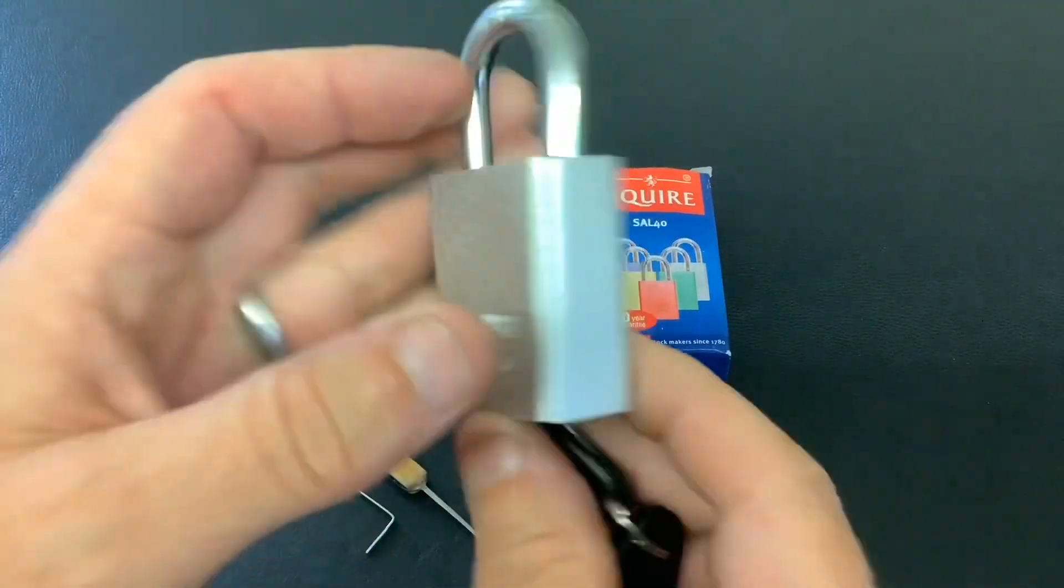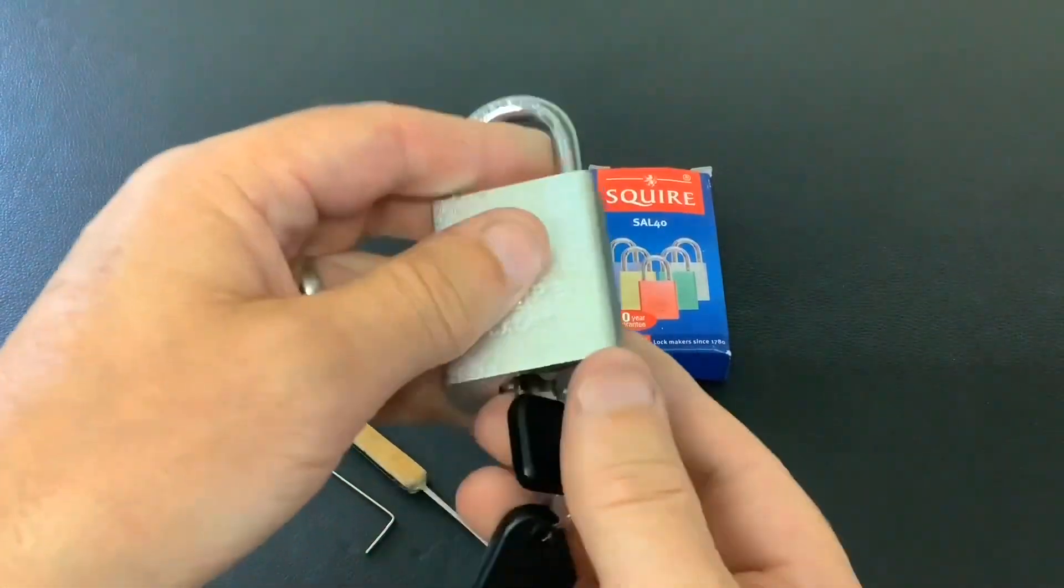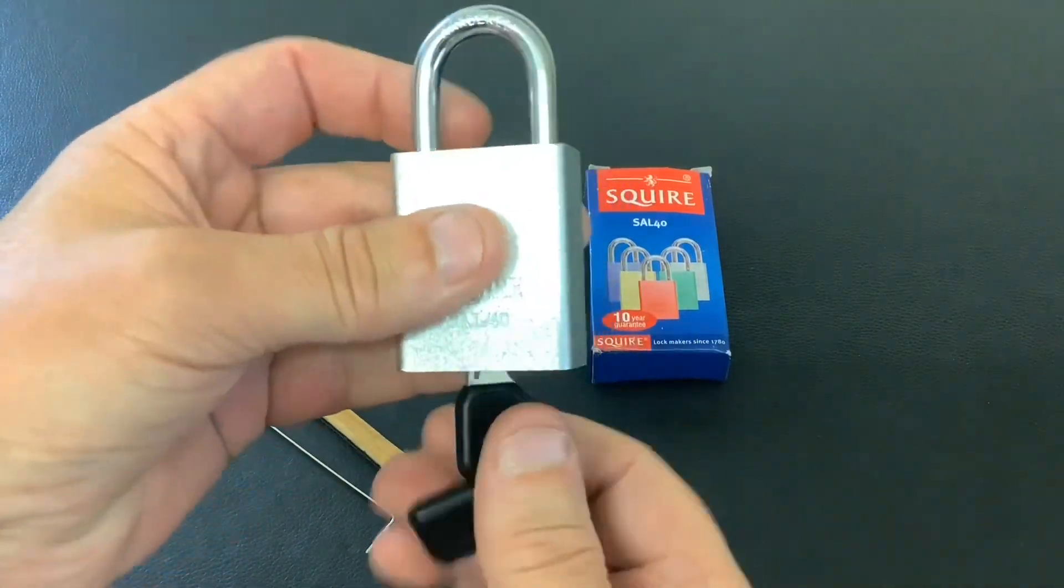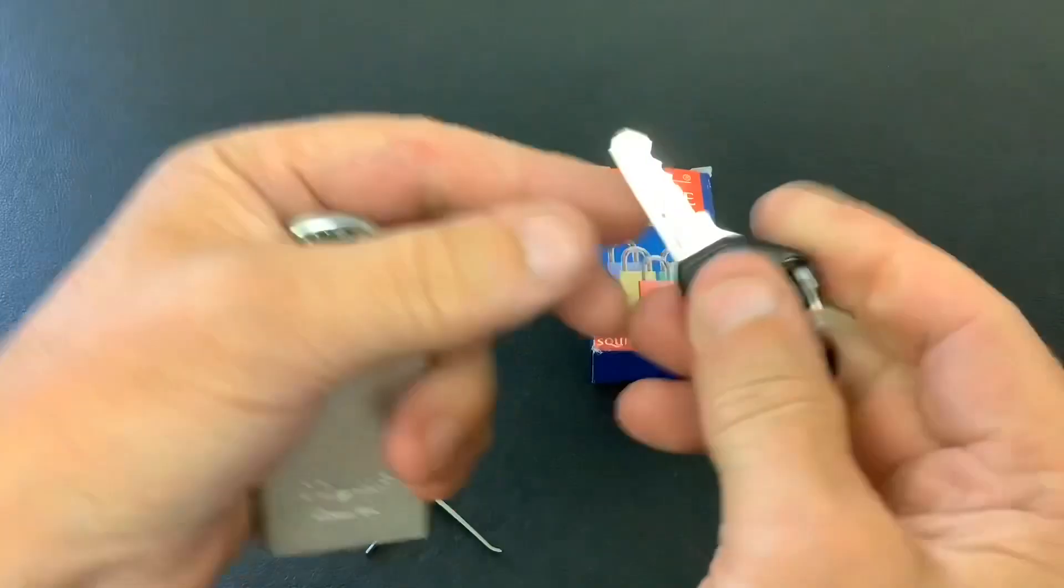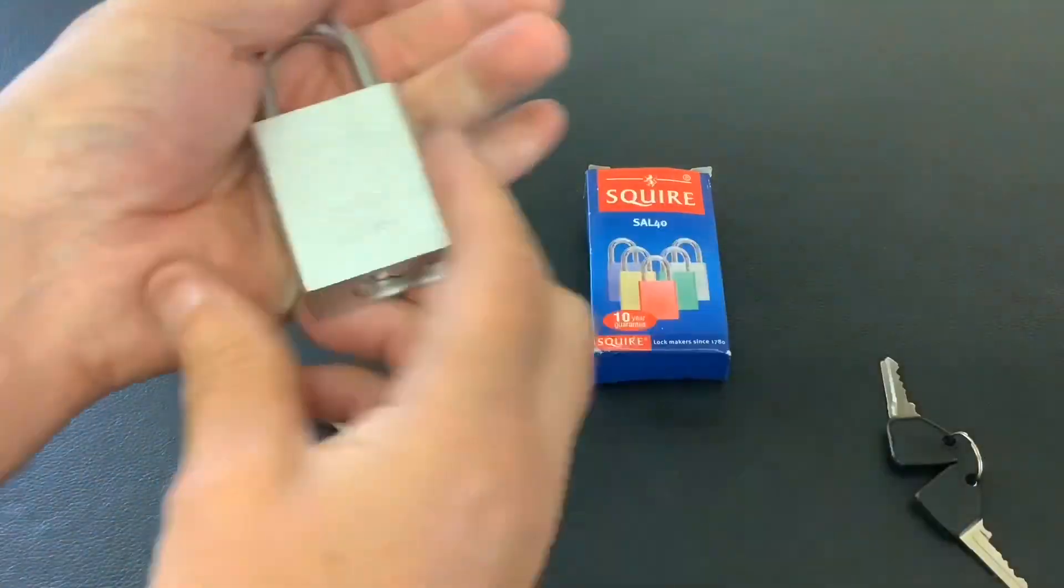Today I've got this Squire SAL 40 sent to me by Peter Lewis, a slot picker, brand new in the box. This one obviously works okay. That's the bit on the key. Now it looks like an American 1100.